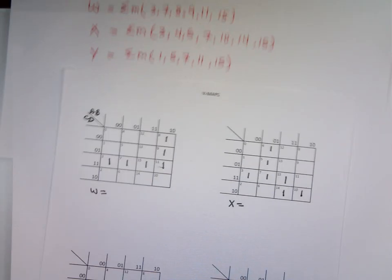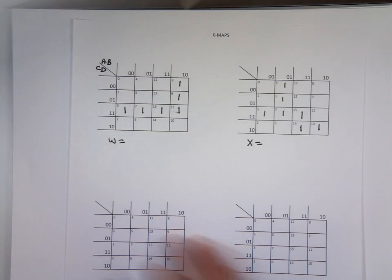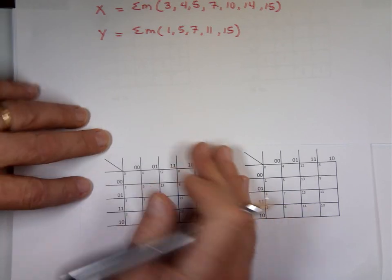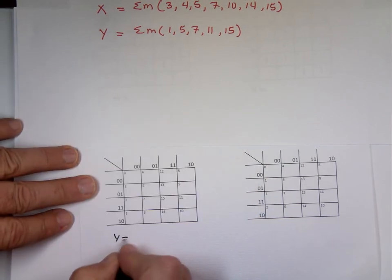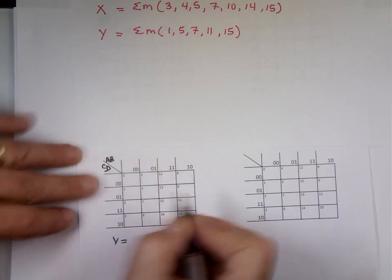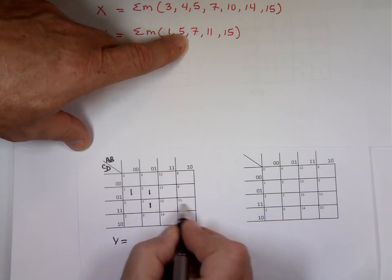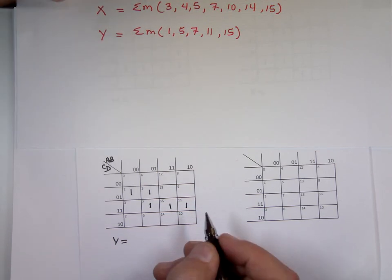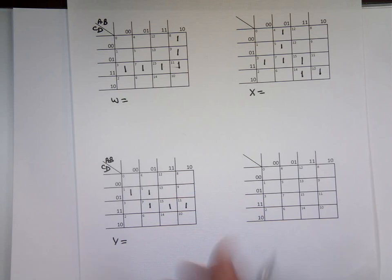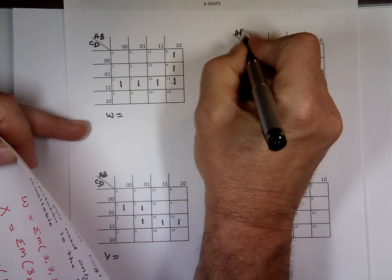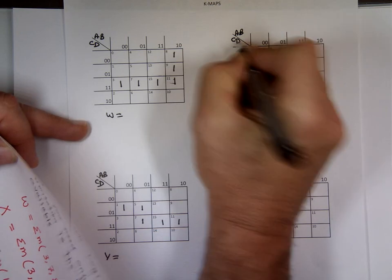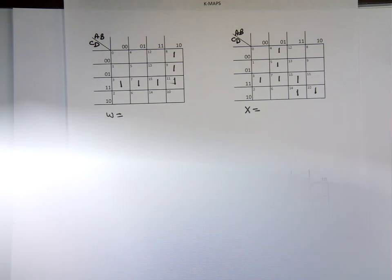And let me do now Y. Here's Y. Now I'll start grouping them in a minute. 1, 5, 7, 11, 15. So I got all the ones there. Since I'm limited by the number of gates, I'm going to be looking to see if I can get a matching one somewhere. Because if I do have a matching one, I can save an AND gate.